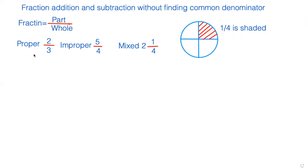Fraction can be proper, like 2 third is the example. The top number is smaller than the bottom number, then we call it proper fraction. Improper fraction when the top number is bigger than bottom number. And mixed fraction where we have a whole number and a portion is fraction, like this.